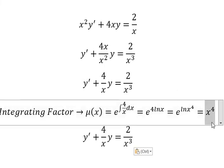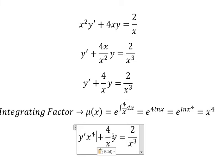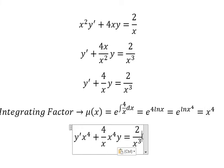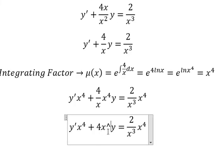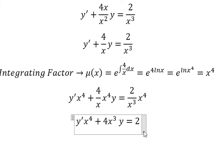That means we multiply both sides by x to the power of 4. This one we have 4x to the power of 3. This one we have 2x.